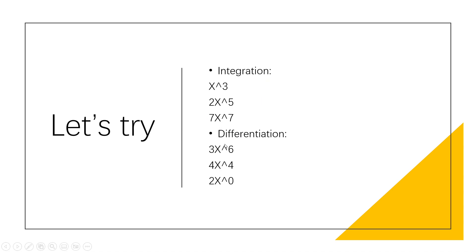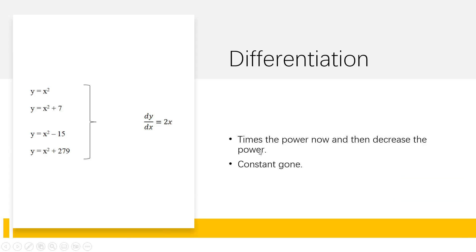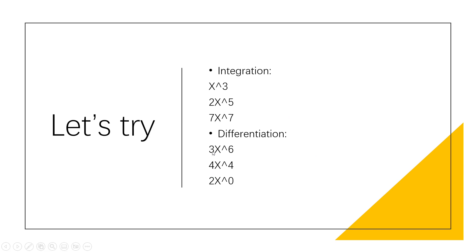For differentiation, we have been told differentiation is opposite of integration. You times the power now and then decrease the power. Three times six, you get 18x^6, and then you decrease the power, you got 18x^5. Four times four is 16, and decrease the power to 3, four becomes three. So you got 16x^3. And for this, 2x^0. As we can see, x^0, whatever the x is, you got 1.